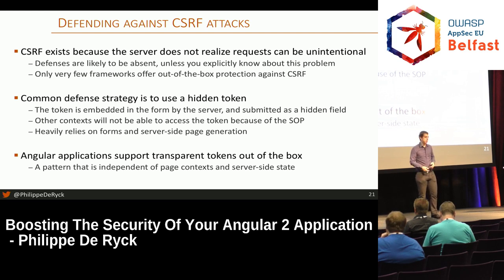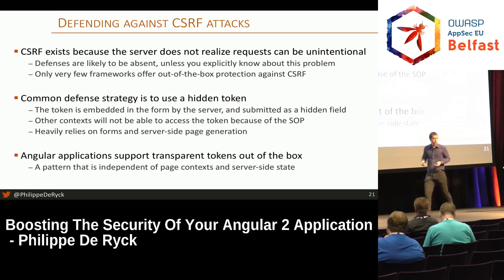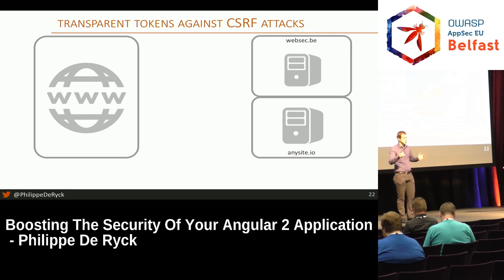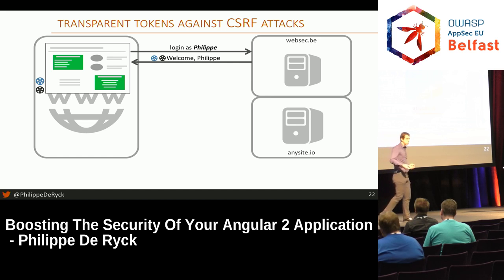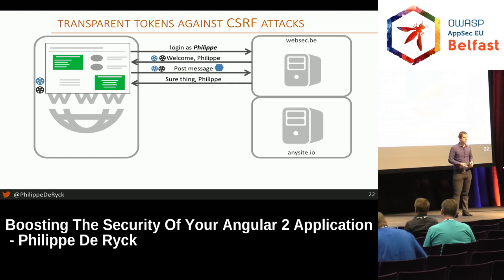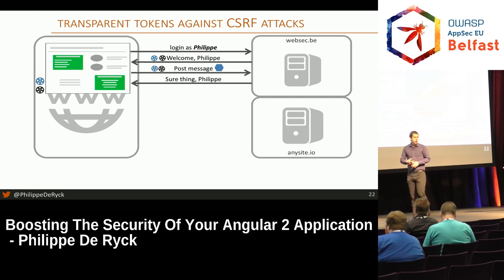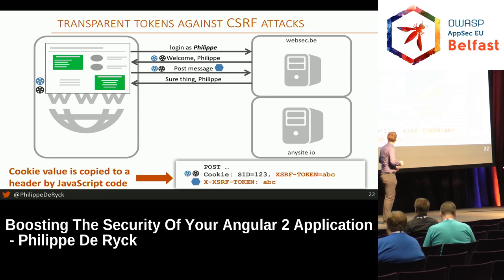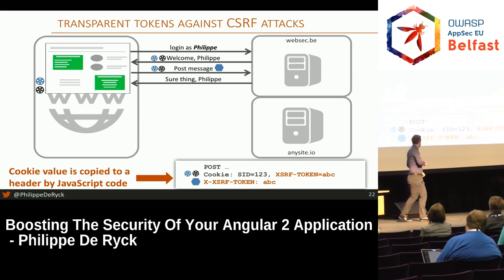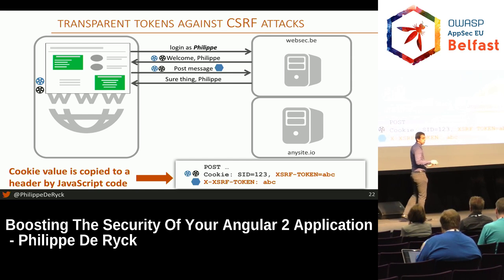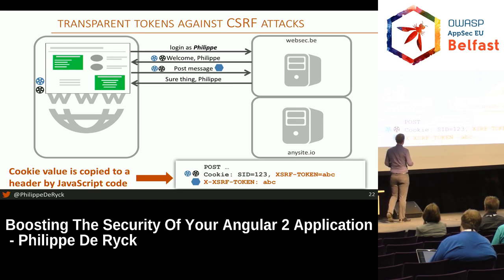Angular applications support a different mechanism called transparent tokens — also known as double cookies. Essentially, instead of simply giving a session cookie, we also get a second cookie stored in the browser. Whenever a request is made, the browser makes sure the second cookie is there. You should also notice that the Angular application copies the token from the cookie to a custom header. You have two cookies: one is a session identifier, the other is a CSRF token. The client-side application — Angular in our case — copies the CSRF token cookie value to the custom header on outgoing requests.